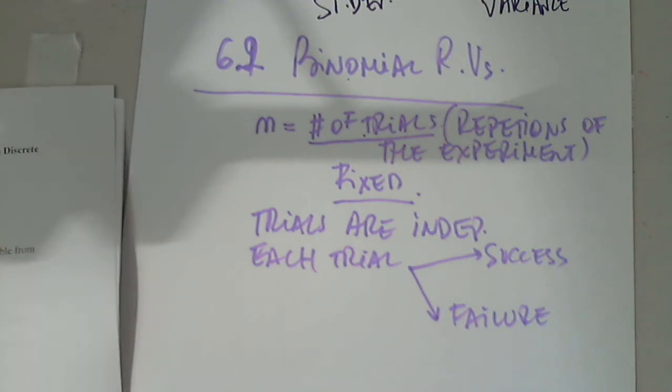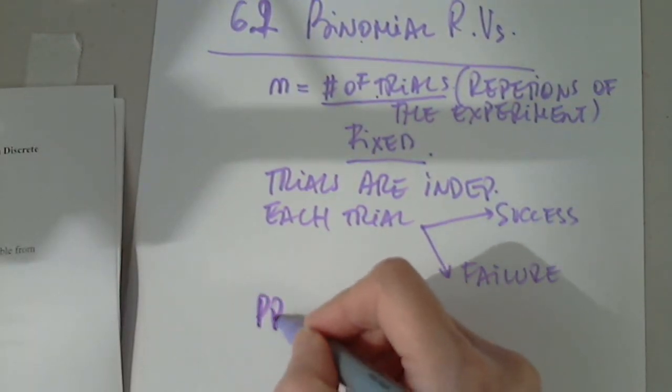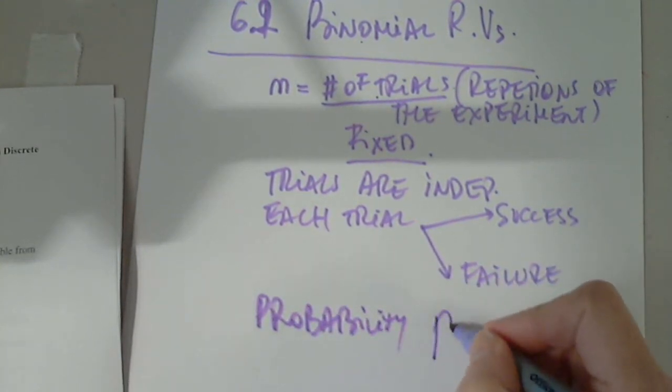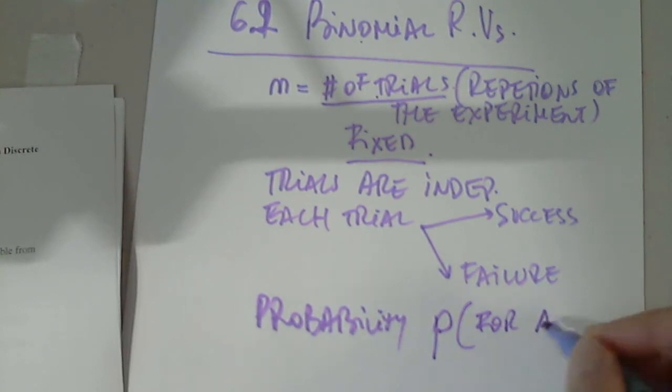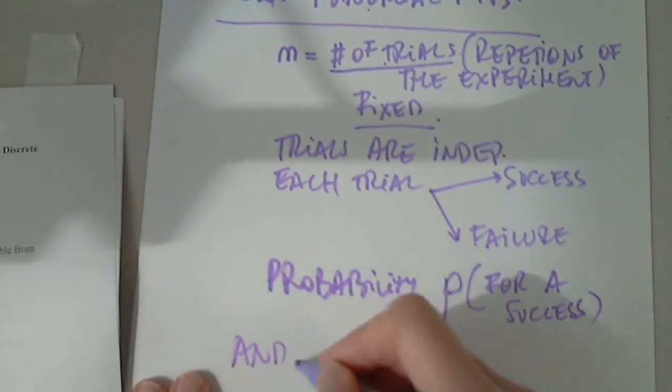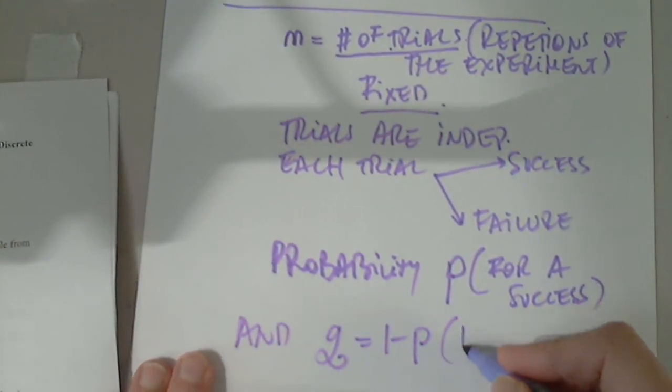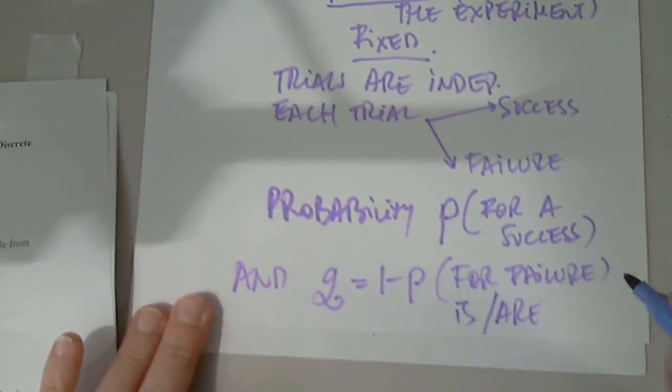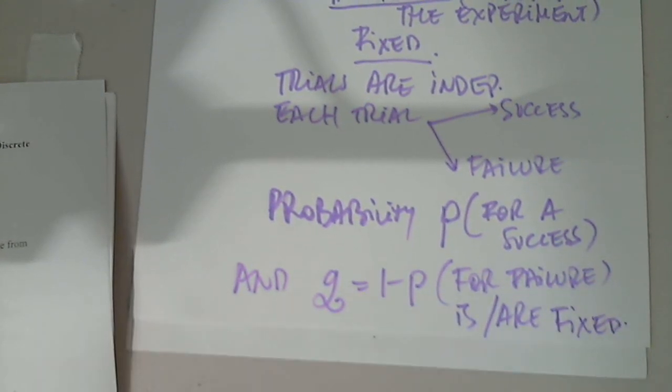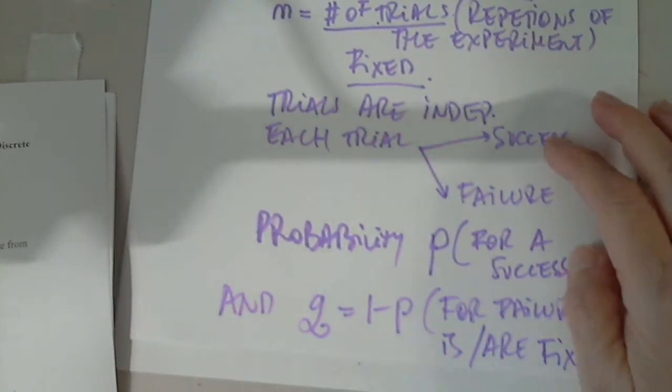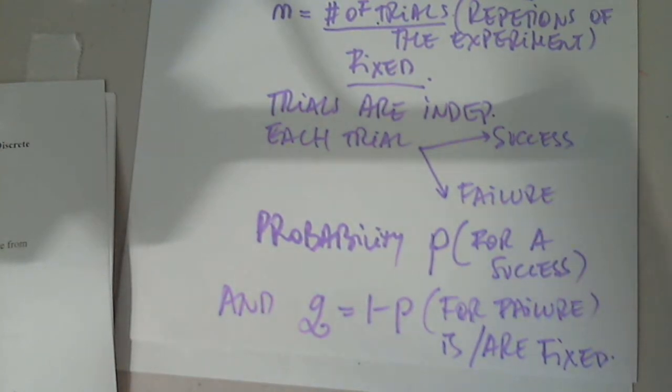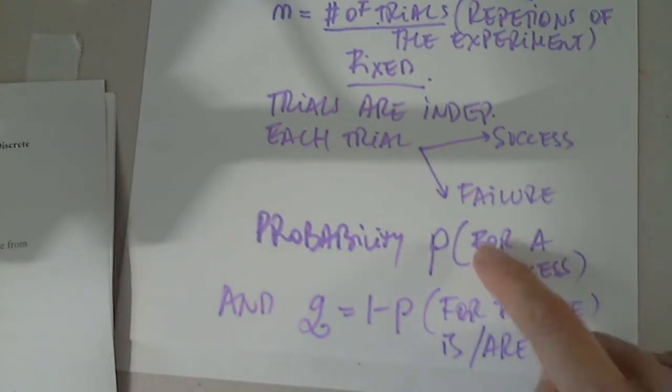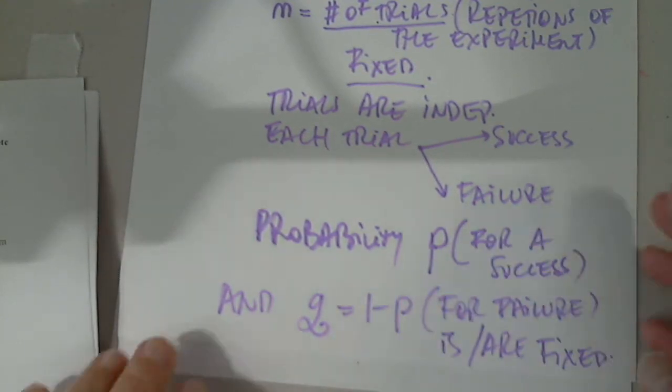And the last one, the probability doesn't change. So probability P for a success, and if you want, it's denoted by Q, one minus P, that's for failure, the other one, is fixed. Or are fixed better. You cannot say that the probability on the first trial for a success is 0.2 and the probability on the second trial for a success is 0.3. No. This is fixed for the entire number of trials, for all the trials, same probability of failure, and the same probability of success and failure. Okay. And I have copied a couple of examples.